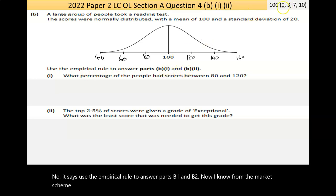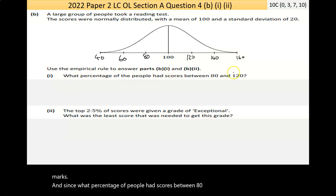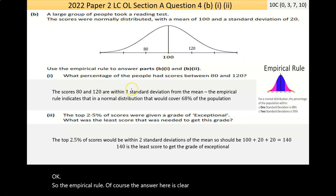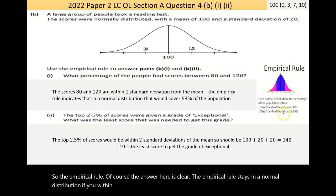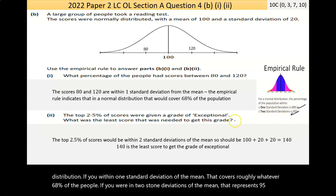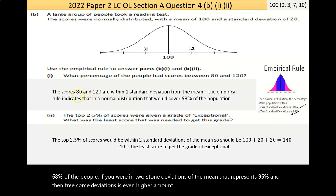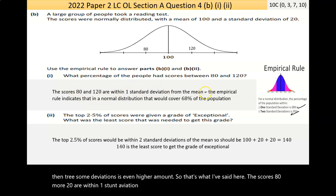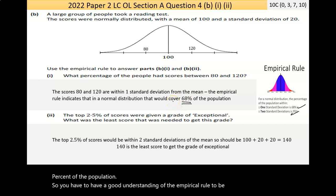From the marking scheme, B1 and B2 are marked together for 10 marks. It says what percentage of people had scores between 80 and 120. The empirical rule states in a normal distribution, if you're within one standard deviation of the mean, that covers roughly 68% of the people. Within two standard deviations of the mean represents 95%, and three standard deviations is an even higher amount. The scores 80 and 120 are within one standard deviation from the mean. The empirical rule indicates that in a normal distribution, that would cover 68% of the population.